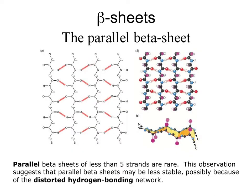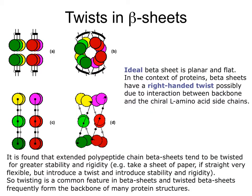Parallel beta sheets have staggered hydrogen bonds and are known to be less stable — parallel beta sheets of fewer than five strands are rare, suggesting these distorted hydrogen bonds are less stable than those of an anti-parallel beta sheet. The ideal beta sheet is planar, but in the context of proteins, beta sheets have a right-handed twist, possibly due to interactions between the backbone and the chiral L amino acid chains.